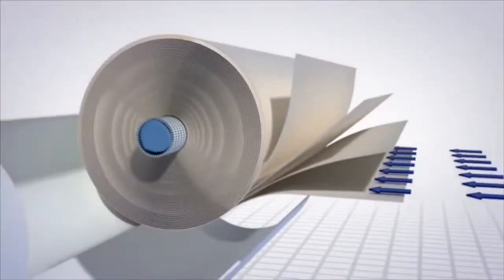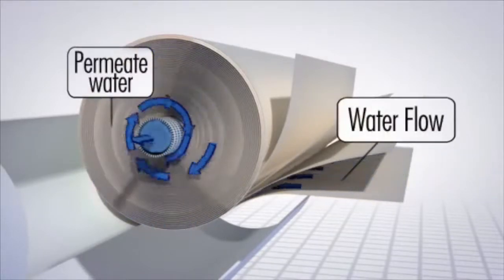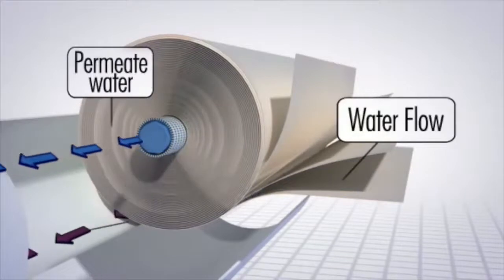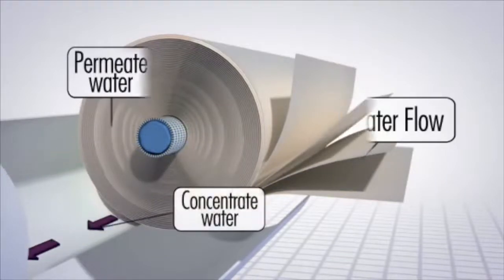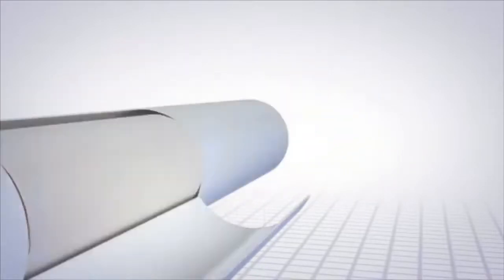Two streams of water are produced. Pure, clean water or permeate flows across the membrane sheets and passes through the membrane layers to the inside core tube. Water that does not permeate becomes more highly concentrated with salts and other substances. This water is called concentrate.